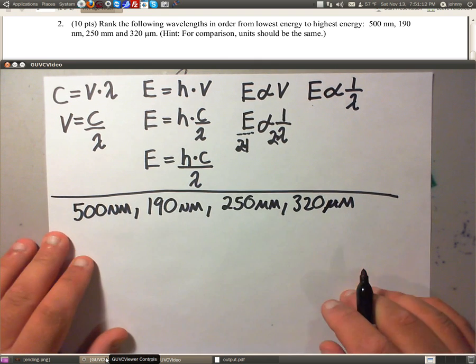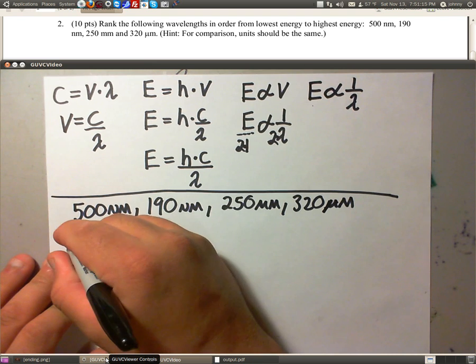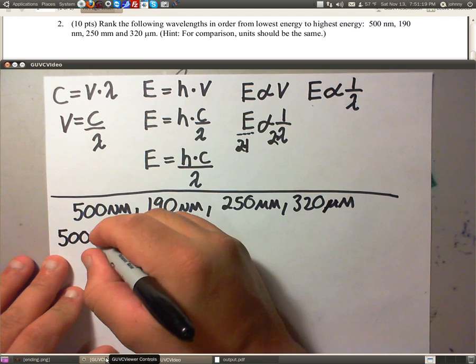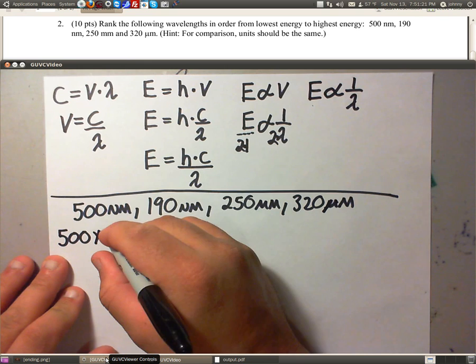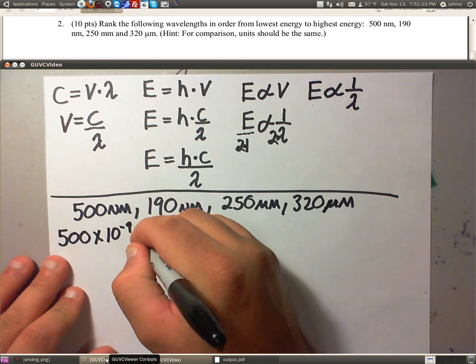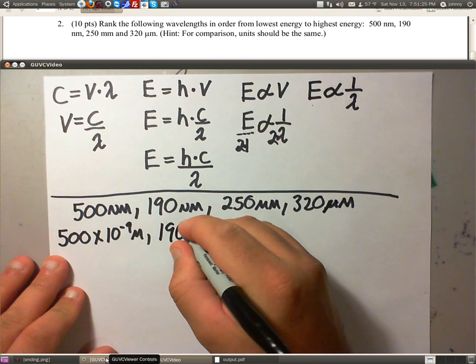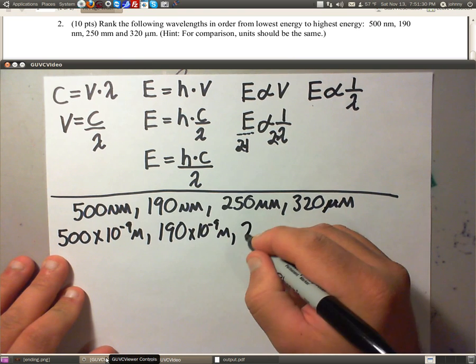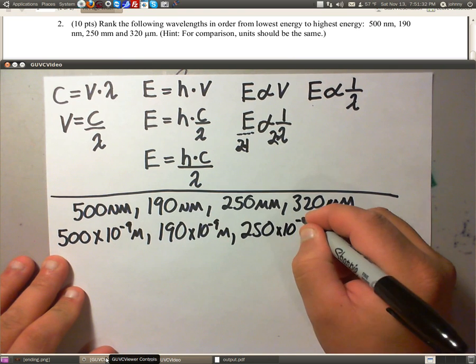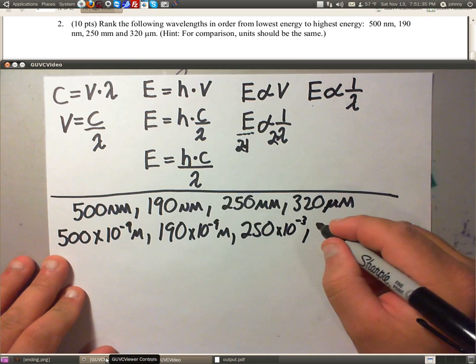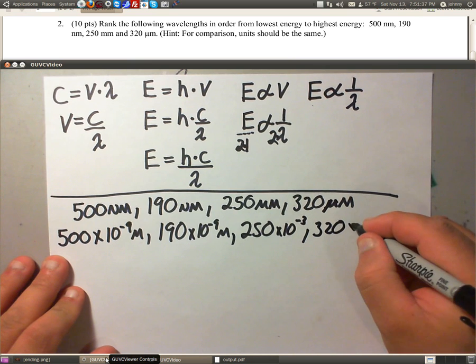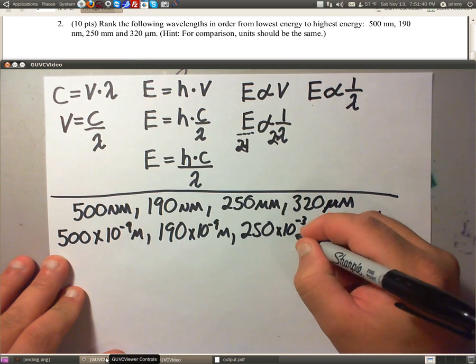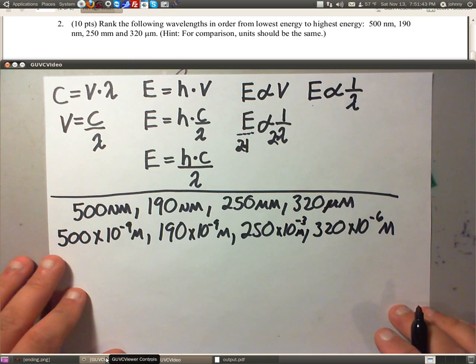Now, let's convert all these to meters. So don't yell at me, but I'm not going to swing any decimals. I'm just going to write the 500 down again. But on nano, I'm going to change it into powers of tens. So that will be times 10 to the negative 9 meters. This one will be 190 times 10 to the negative 9 meters. This one will be 250 times 10 to the negative 3. This one will be 320 times 10 to the negative 6 meters. I forgot my meter sign on this one.